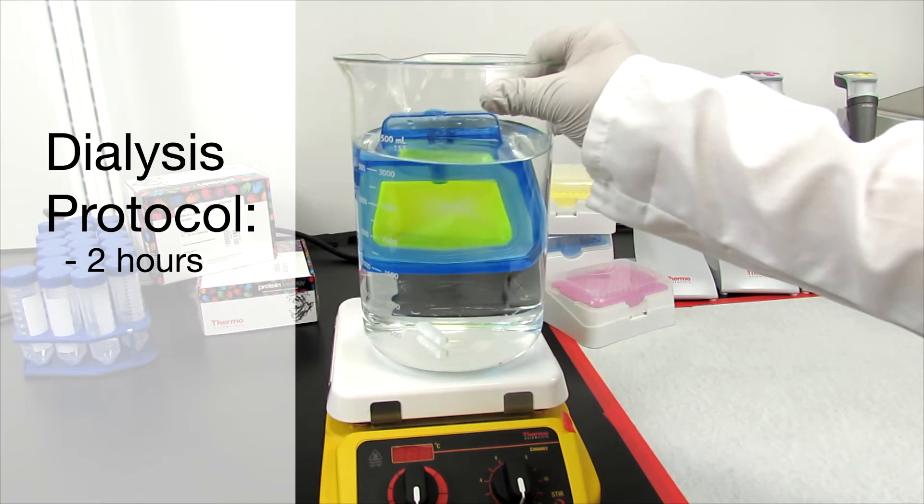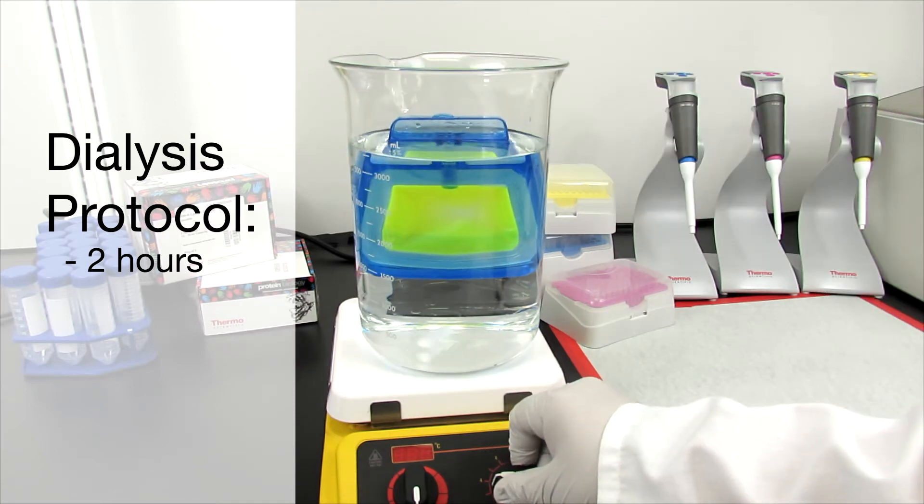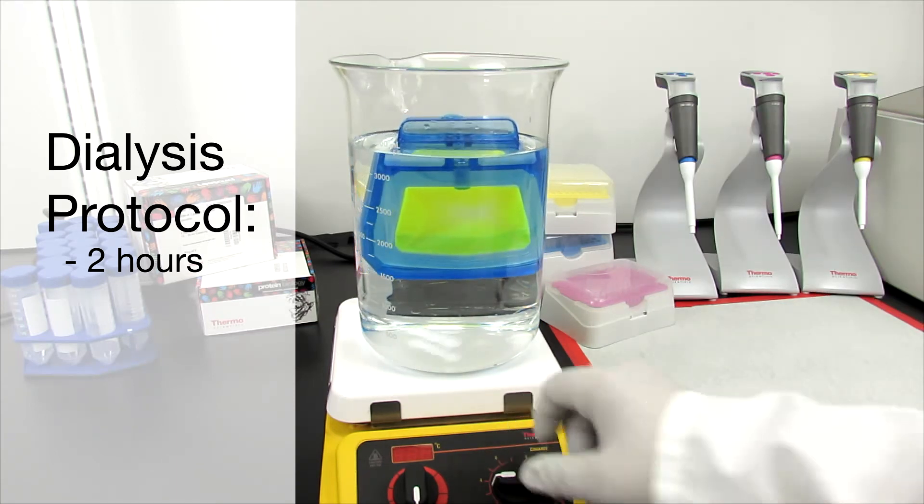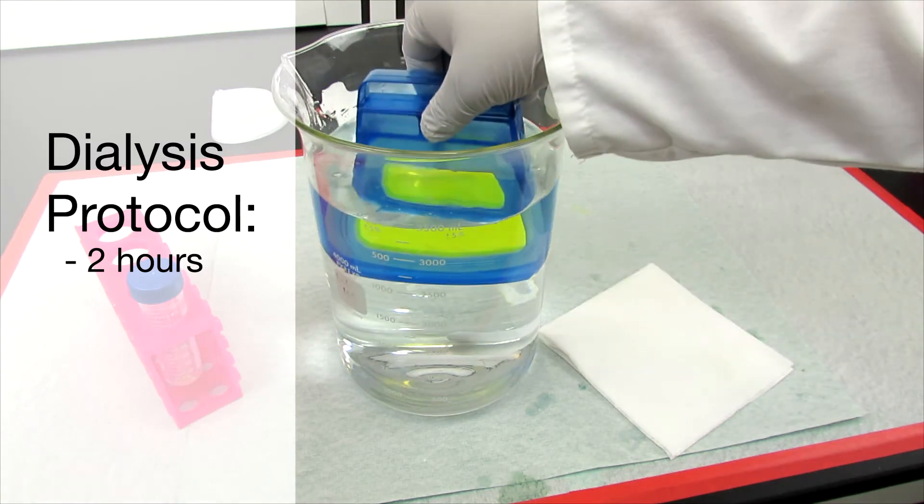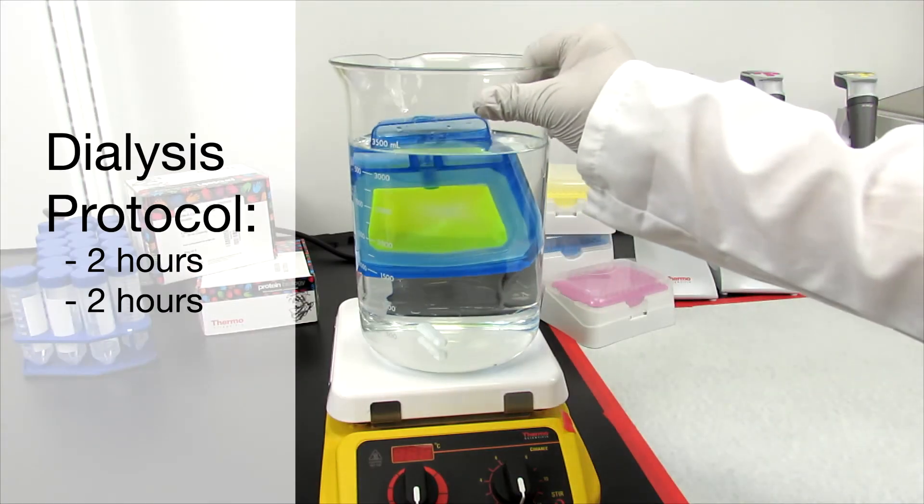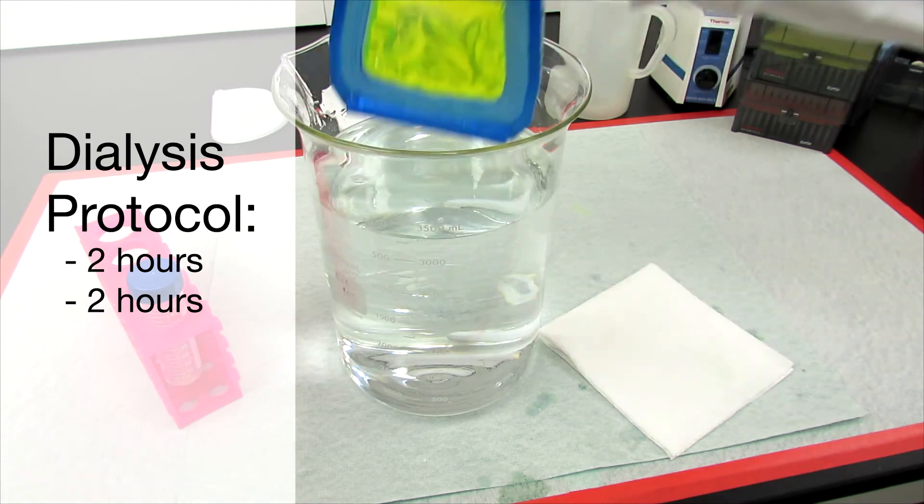A typical protocol begins by dialyzing the sample for two hours at room temperature or in a cold room. After changing the dialysis buffer and dialyzing for another two hours, change the buffer again and dialyze overnight.